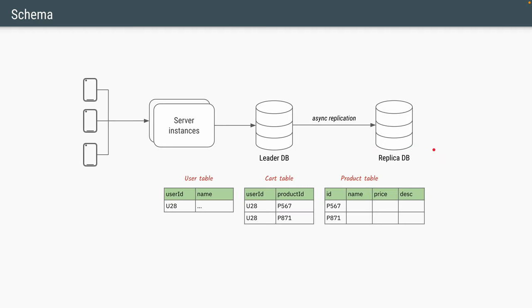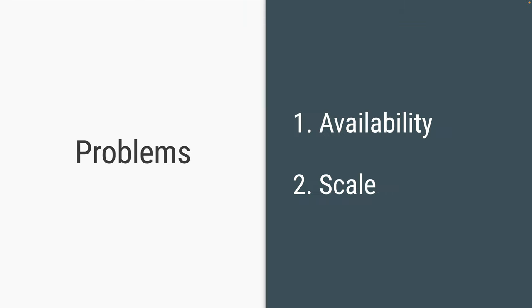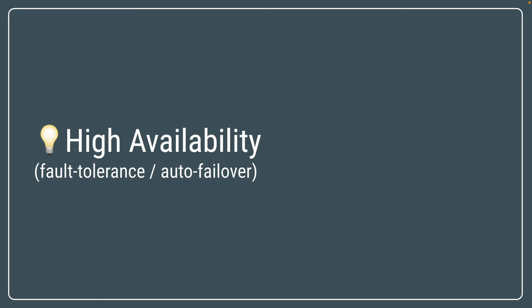The schema for this is also very simple and straightforward. We have a user table with the user ID and a bunch of columns related to the user. We'll have a product table with the product ID and related columns, and we'll have a cart table with the mapping of the user ID and all the product IDs the user has stored in their shopping cart. Now, this architecture has two main problems: high availability and scale.